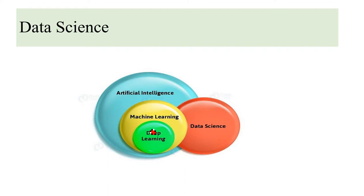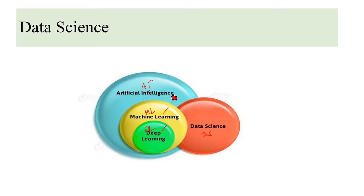Deep learning is a subset of machine learning, and machine learning is a subset of artificial intelligence. Data science is a combination of deep learning, machine learning, and artificial intelligence.